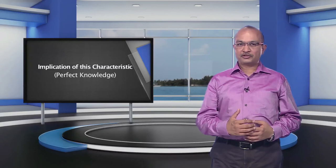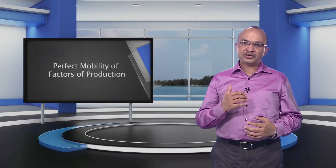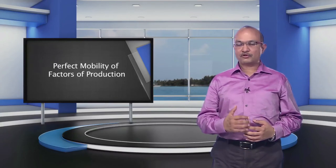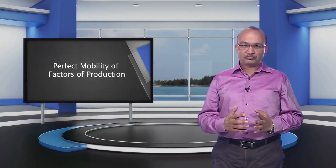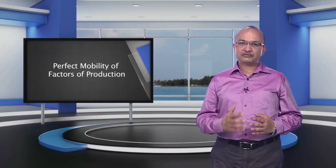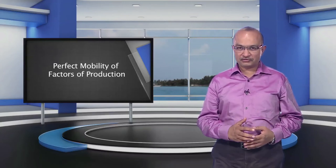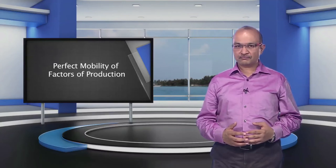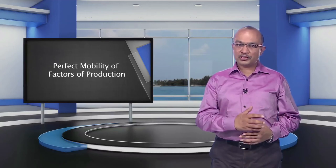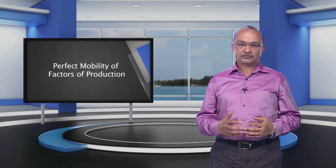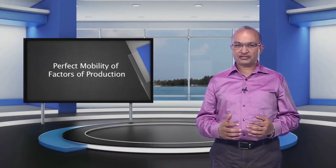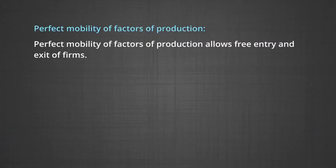Another feature of perfect competition is perfect mobility of the factors of production. We assume perfect mobility of goods and factors of production between industries. Factors can also move from a low paying to a high paying industry. Land, labour, and capital are three major factors of production, and their perfect mobility allows free entry and exit of firms.